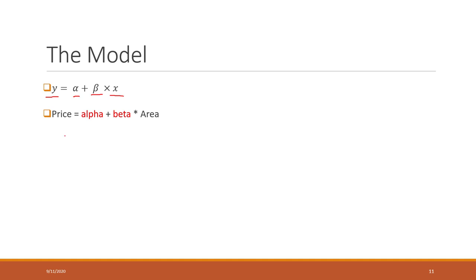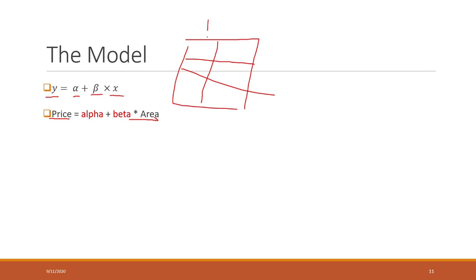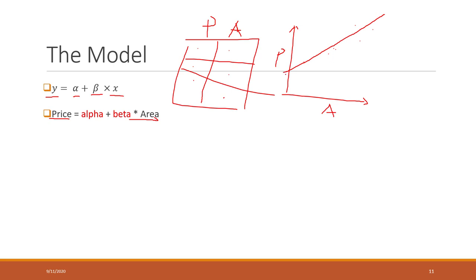For example, if we want to predict the price based on the area, we have a lot of data points — those are the prices and those are the areas. So we know the price and the area for some houses, and we put that onto a chart to visualize the data. That is the price and that is the area. It is a simple linear regression model, so the line will be a straight line. That is our prediction model, and that model is controlled by those two parameters: alpha and also beta.